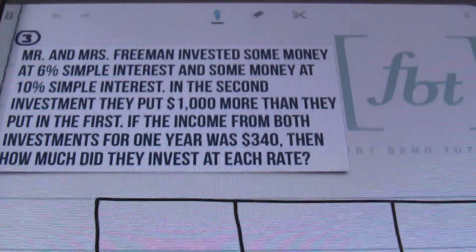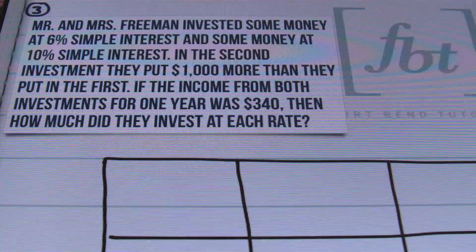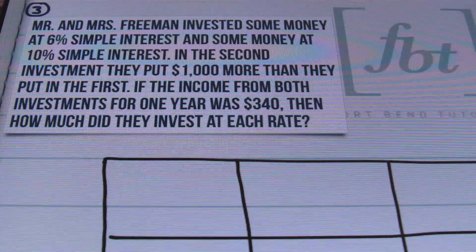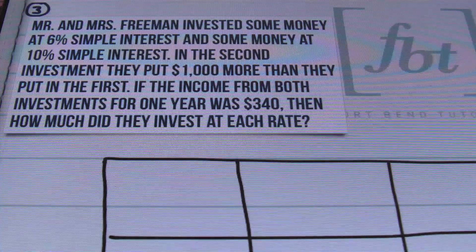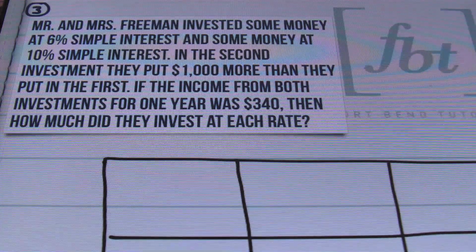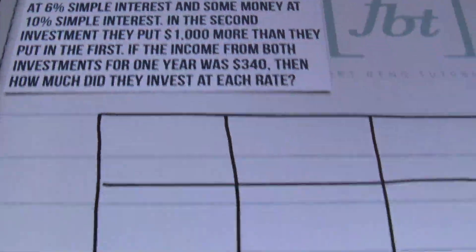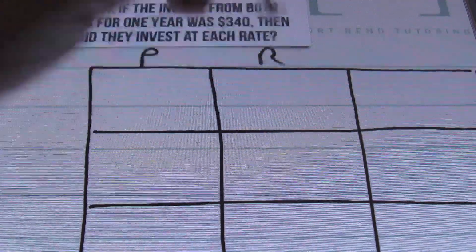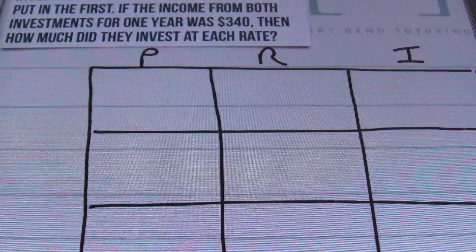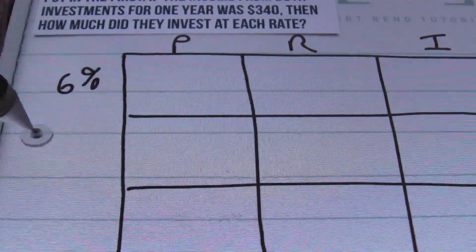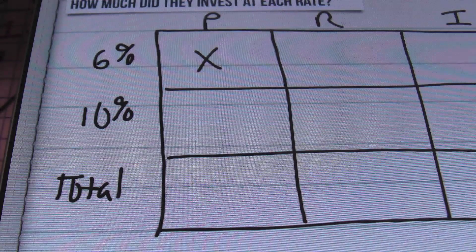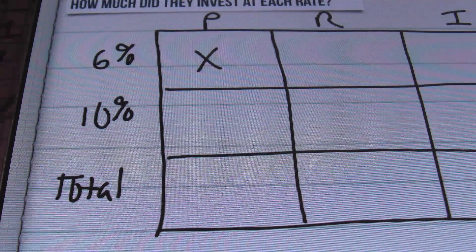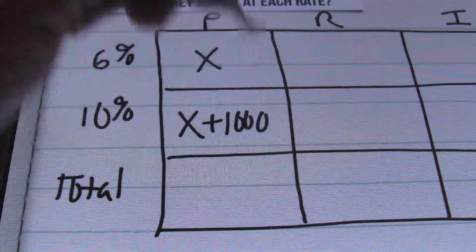In problem number three, it says: Mr. and Mrs. Freeman invested some money at 6% simple interest and some money at 10% simple interest. In the second investment, they put $1,000 more than they put in the first. If the income from both investments for one year was $340, how much did they invest at each rate? We'll use the simple interest formula again with columns for principal, rate, and interest.